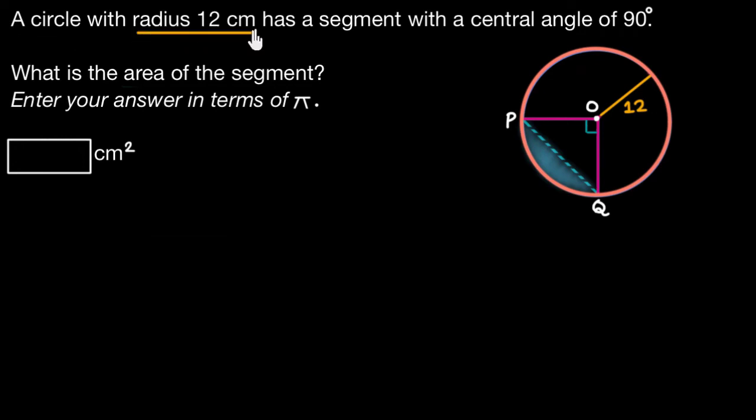A circle with radius 12 cm has a segment with a central angle of 90 degrees. What is the area of the segment? We have a circle over here, and this shaded region bounded by the chord PQ and this arc of the circle makes up a segment, and we need to figure out its area.